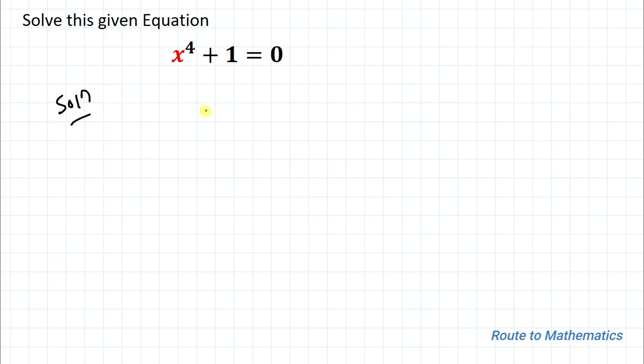The given equation is x to the power 4 plus 1 equals to 0. In the first approach, I am going to use a complex method.